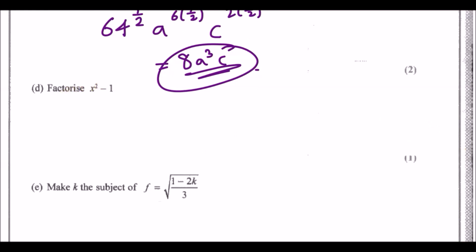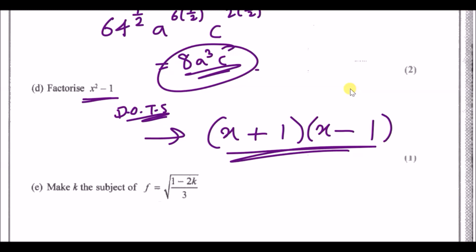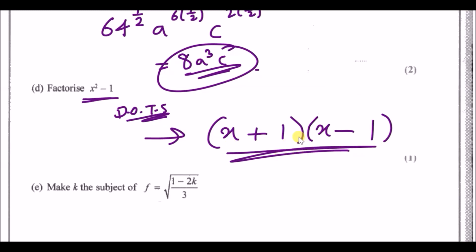Factorise x squared minus 1. There's nothing in common so this is difference of two squares — a square term minus another square term. You get a double bracket solution instantly. Square root x² gives x, and square root 1 gives 1, so the answer is (x + 1)(x − 1). It will always be plus and minus with the same terms.